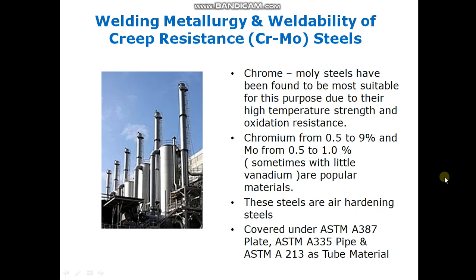In composition, chromium is ranging from 0.5 to 9% and molybdenum from 0.5 to 1%, and sometimes a small amount of vanadium is also added for strengthening purposes. These steels are air hardening steels, meaning they obtain hardness by quenching in air only. Chrome-moly steels are covered under ASTM A387 plate material, ASTM A335 pipe material, and ASTM A213 tube material.